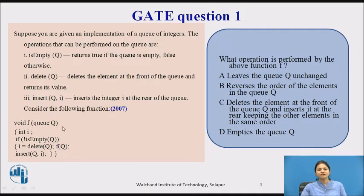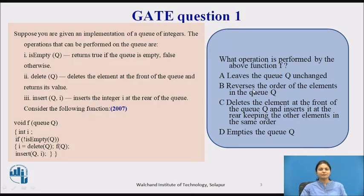Now we will consider the following function and answer this. void f(q, integer i): if not is_empty(q), then i = delete_q, and f(q), and insert_q(i). What operation is performed by the above function f? The options are: it leaves the queue unchanged, reverse the order of elements in the queue, deletes the element at the front of the queue and inserts it at the rear keeping other elements in the same order, or empties the queue.